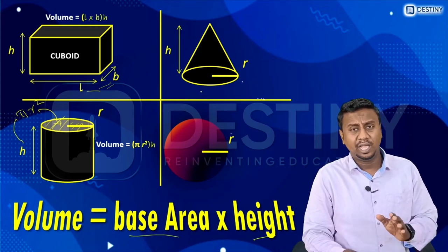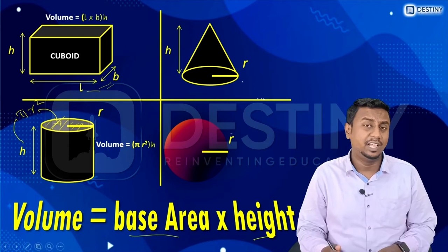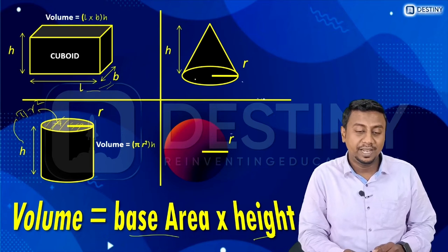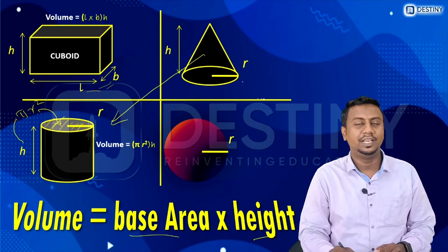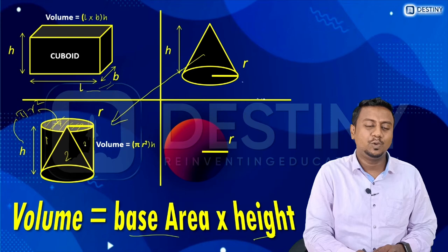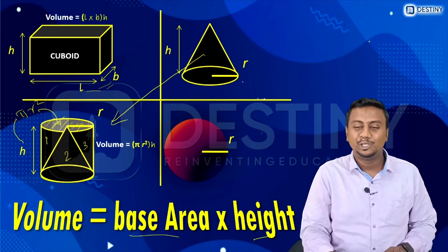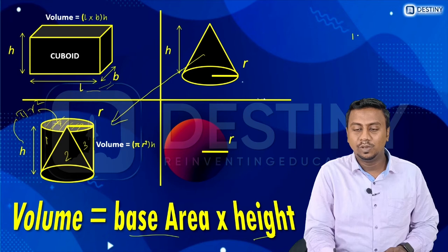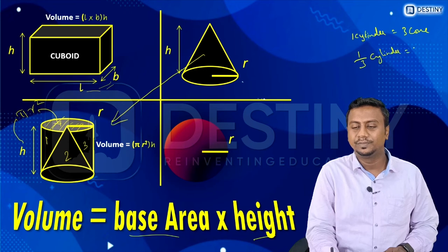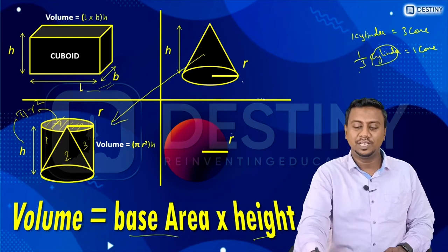Moving on to the cone — just as I compared a triangle with a rectangle and found that one rectangle equals two triangles, I'll compare the cone with the cylinder. In a cylinder, three cones can be fit. So one cylinder equals three cones, meaning one cone equals one-third of a cylinder. Therefore, the volume of a cone is one-third of the volume of a cylinder.